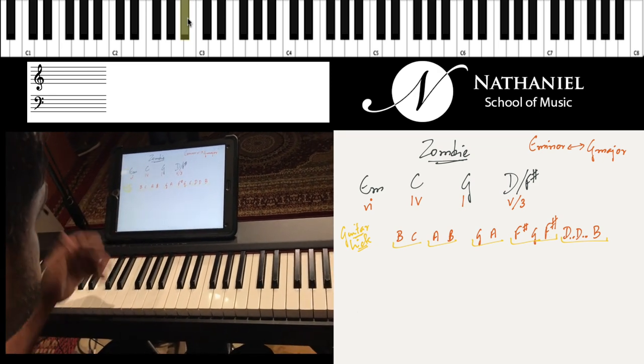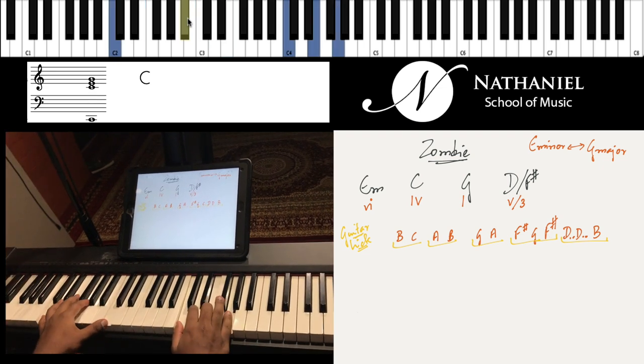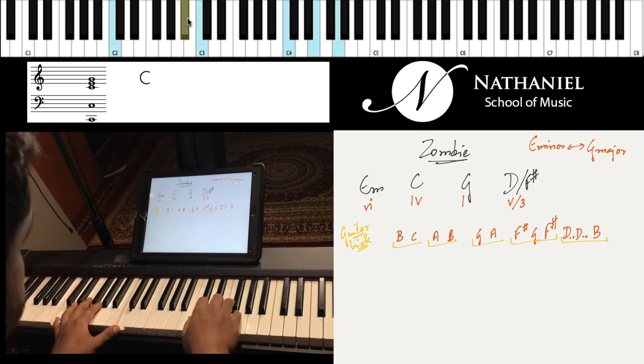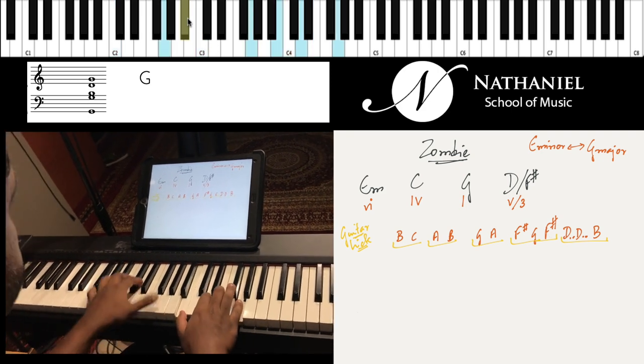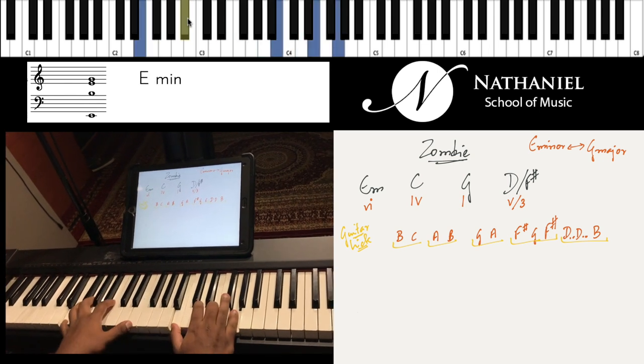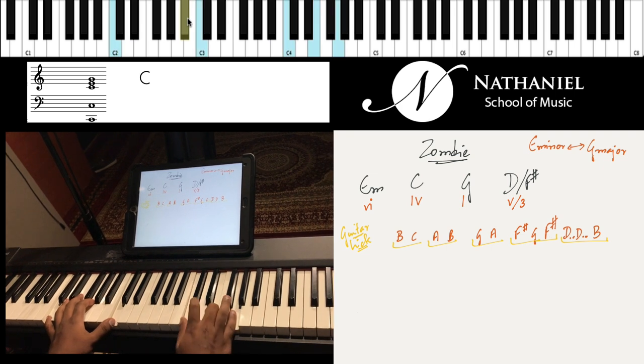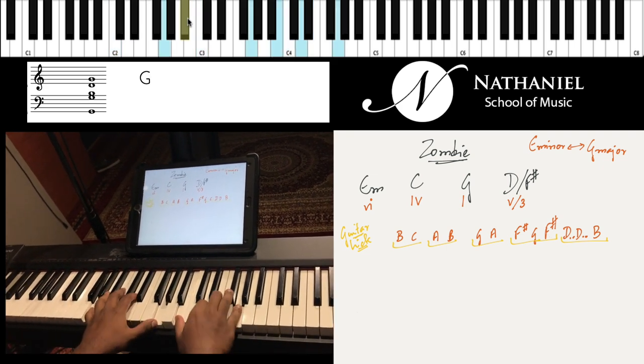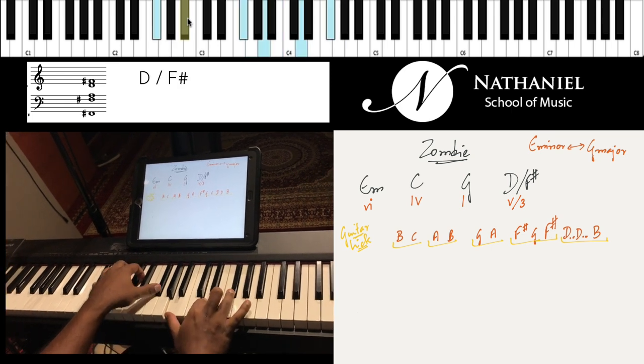Let's just see how that sounds: E minor, C major, G major, D with F sharp. E minor, that's the six. C major, all four times. G major once, and D with F sharp for one bar again.